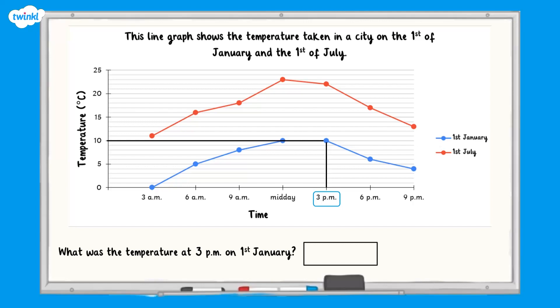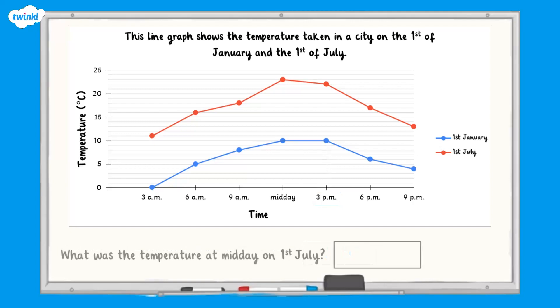We can see it was 10 degrees at 3pm on the 1st of January. What was the temperature at midday on the 1st of July? Pause here and see if you can work out the answer.